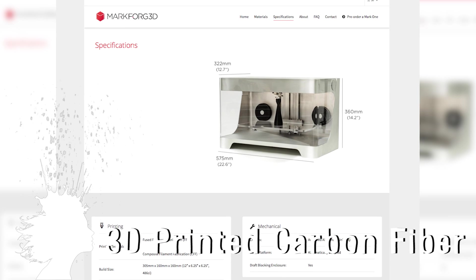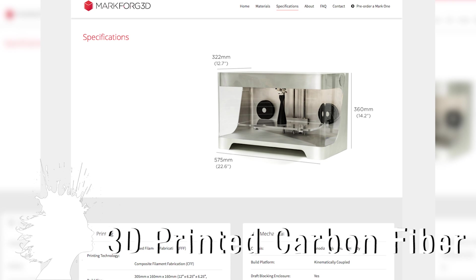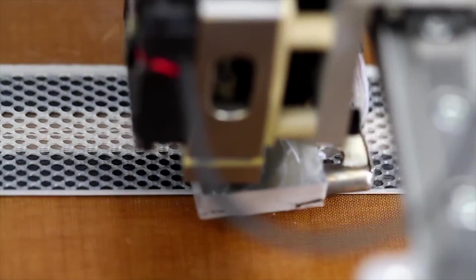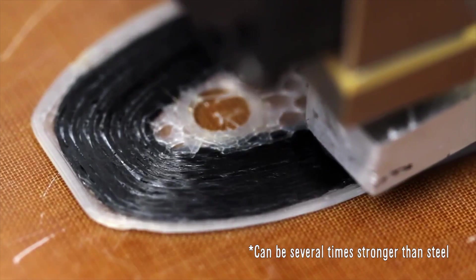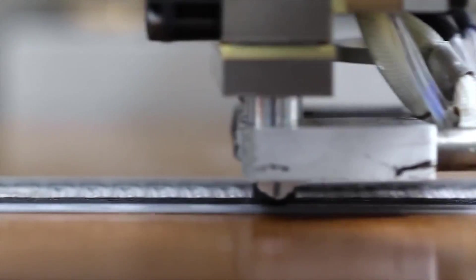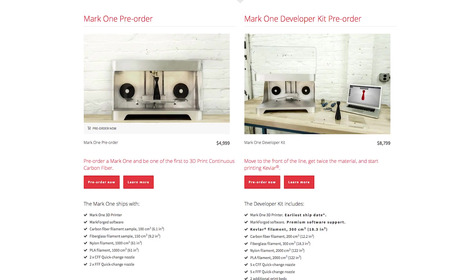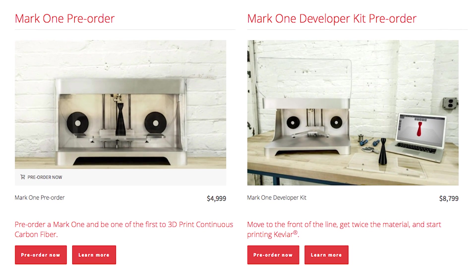The Mark 1 is a 3D printer that is able to print the lightest, strongest material in the world. It's able to print continuous carbon fiber which is stronger than metal. This breakthrough has applications ranging from prosthetics and robotics to making motorcycle parts and it ships in the second half of 2014.